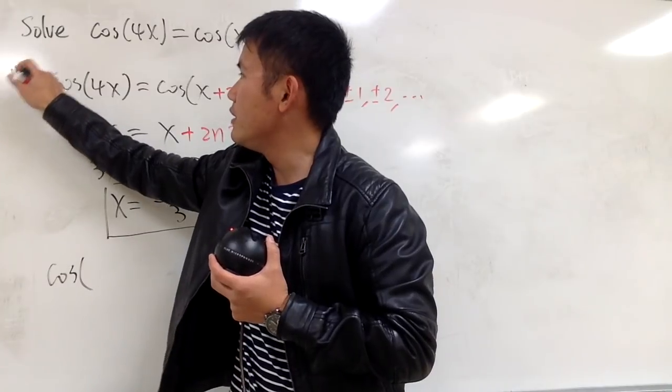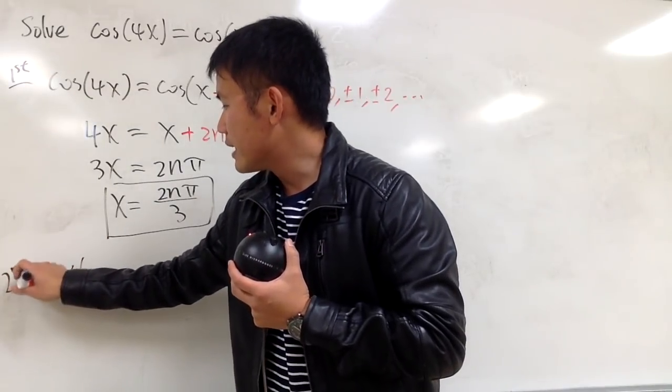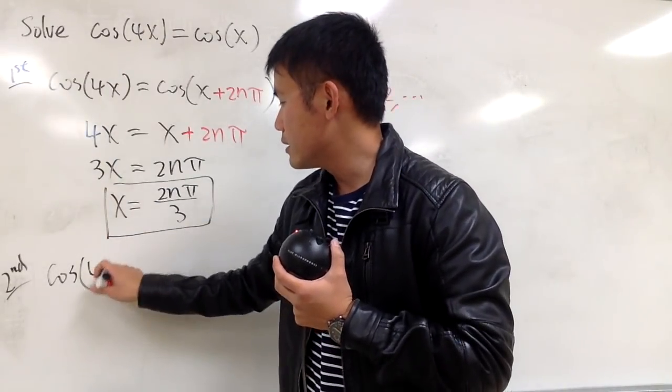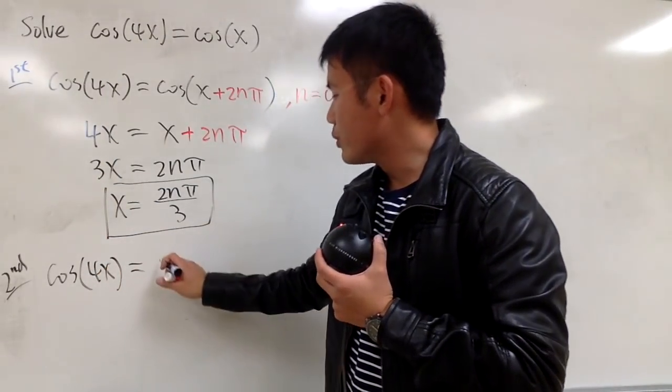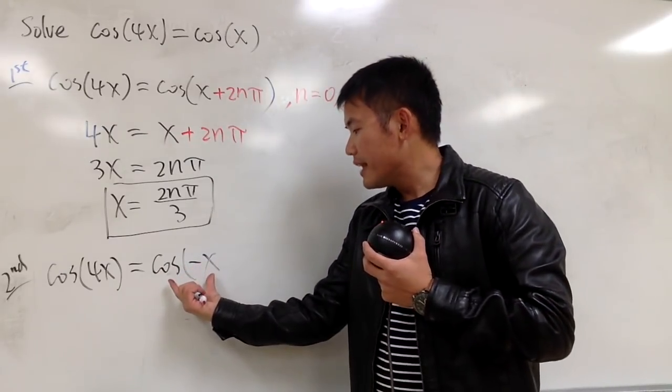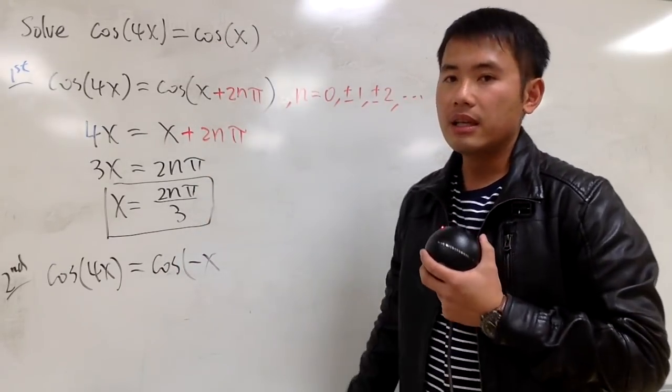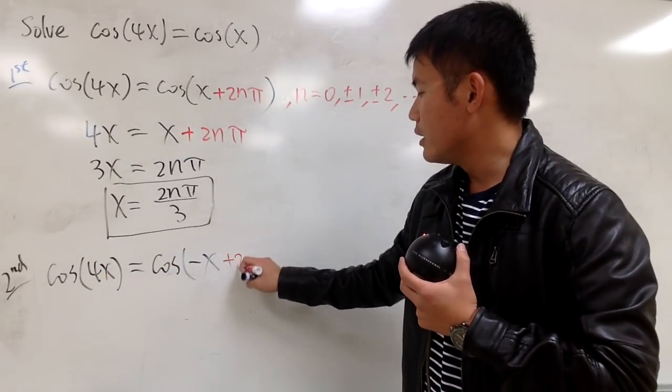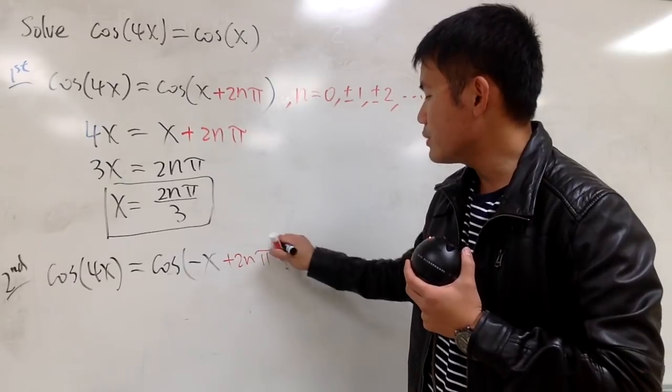I will have to look at cosine of 4x that's equal to cosine of negative x. Cosine of negative x is the same as cosine of x. And of course, I cannot just cross out the cosine unless I include the 2nπ from here as well.